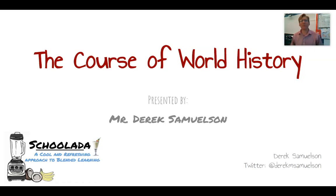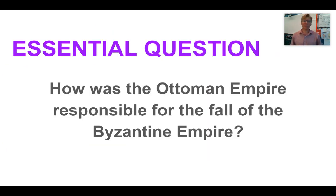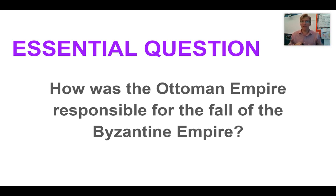Hello everyone, and welcome to the course of world history. I am Mr. Samuelson, and this is the Byzantine Fall. We're going to be talking about the final collapse of the empire in today's lesson. Our essential question: how was the Ottoman Empire responsible for the fall of the Byzantine Empire? In a lot of ways, the Byzantines are responsible for their own fall, and we can also blame the Venetians and Western Europeans in general. But the Ottomans are really going to take the overall credit for the collapse of this empire, and that's what we'll be looking at today.